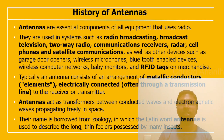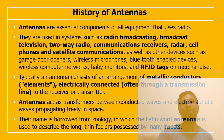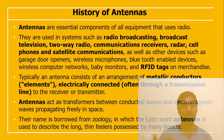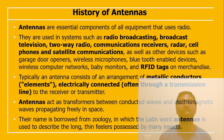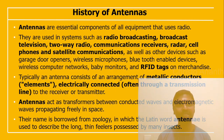Antennas are an important part of all equipment that uses radio. They are used in systems like radio broadcasting, broadcast TV, two-way radio communication, radar, cell phones, satellite communication, garage door openers, wireless microphones, Bluetooth-enabled devices, wireless computer networks, baby monitors, and RFID tags. An antenna has an arrangement of metallic conductors called elements, which are electrically connected through a transmission line to the receiver or transmitter. Antennas act as transformers between conducted waves and electromagnetic waves propagating freely in space.